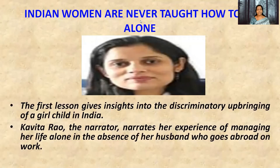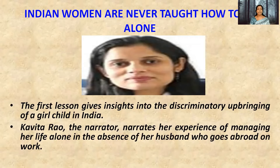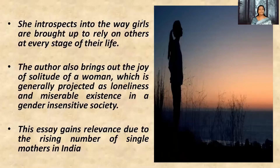The first lesson, titled 'Indian Women Are Never Taught How to Be Alone', is written by Kavitha Rao. She tries to give us an insight into the discriminatory upbringing of a girl child in our country. She narrates her own experience of managing her life alone when her husband had gone abroad on work. In this lesson, Kavitha Rao reflects upon how girls are brought up to rely on others and are never taught to take independent decisions, remaining dependent on someone in every phase of their life.